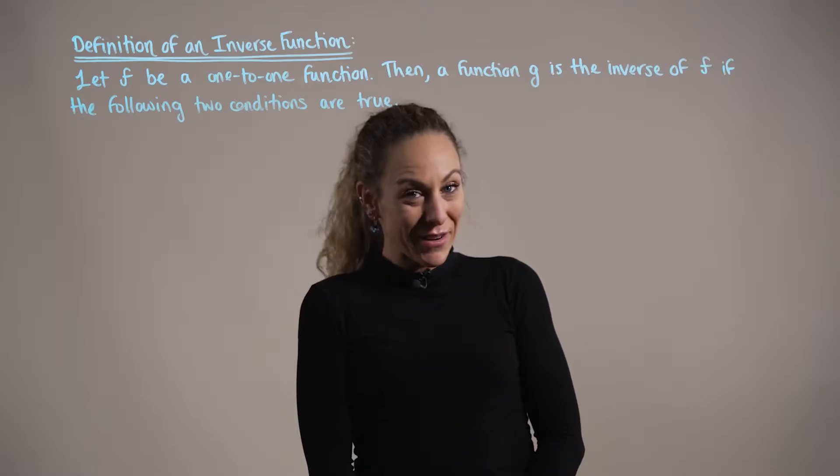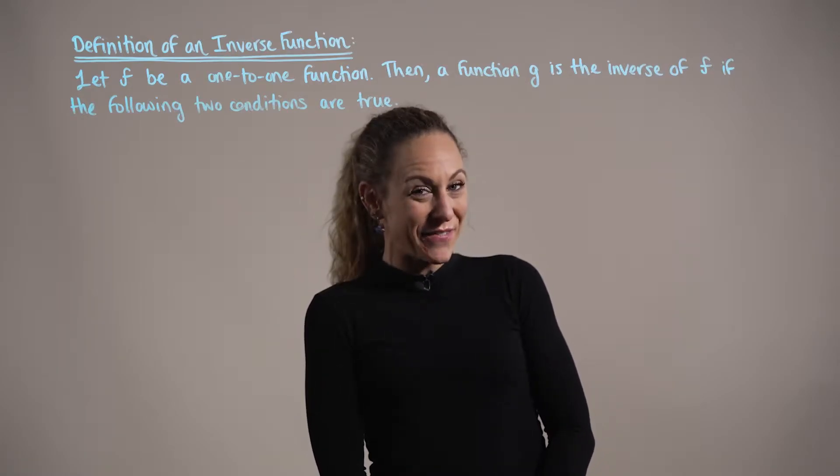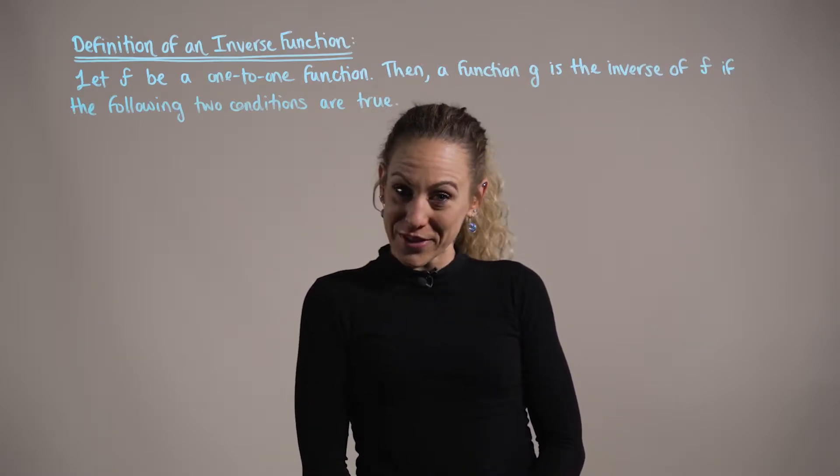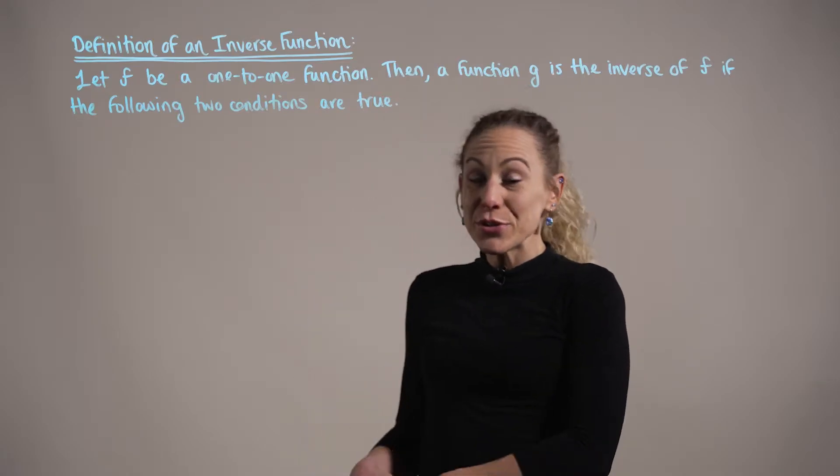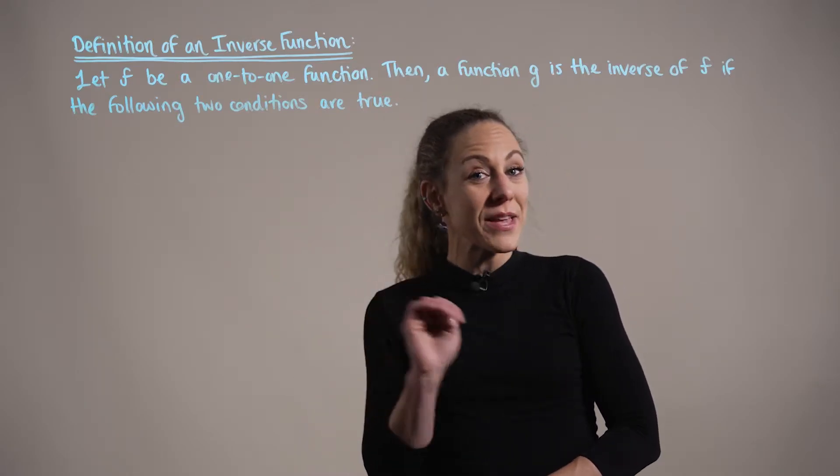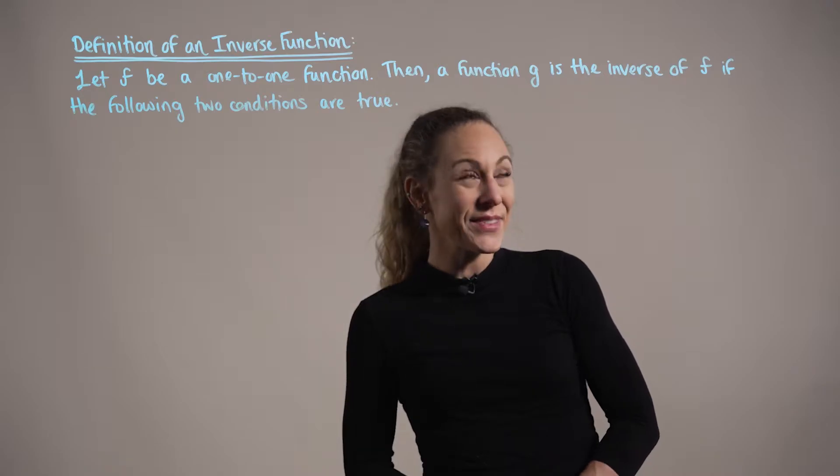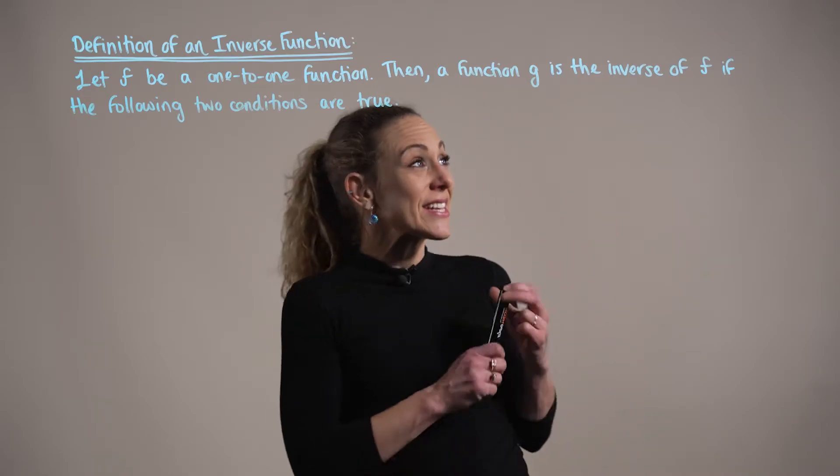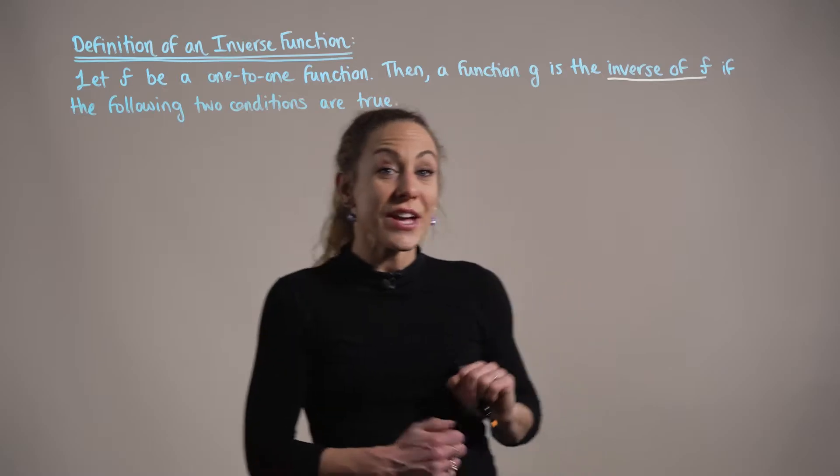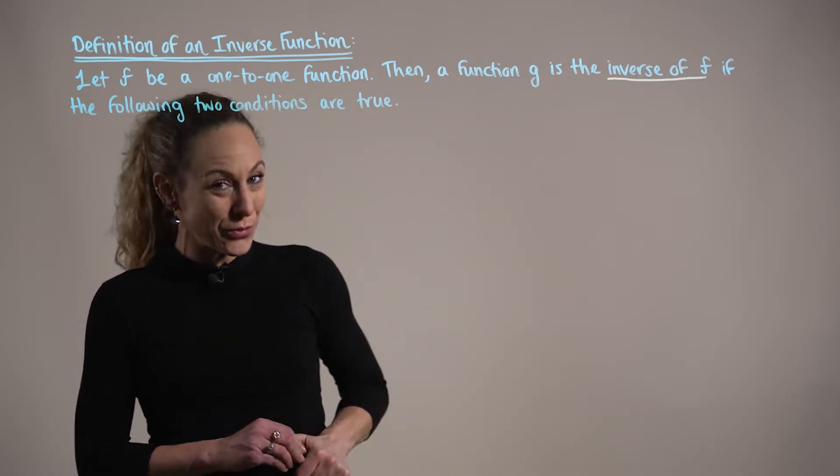We now have enough background information to officially define the definition of an inverse function. So to do this, let's begin by letting f be a one-to-one function. Then we say that g is the inverse of our function f if the following two conditions hold true.